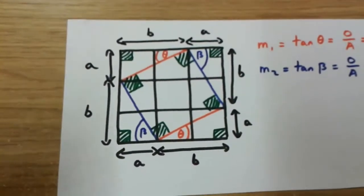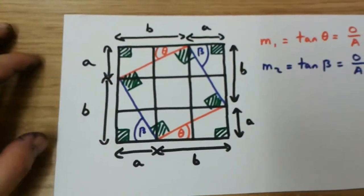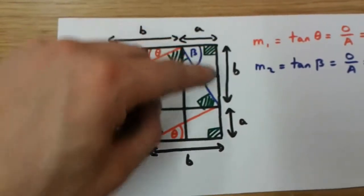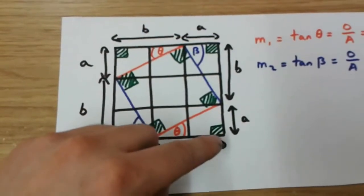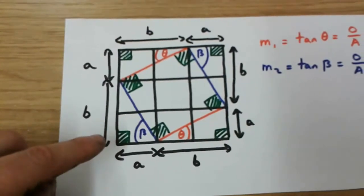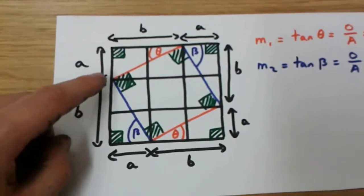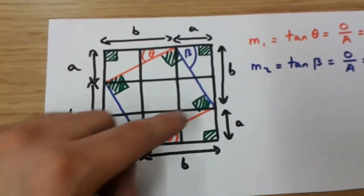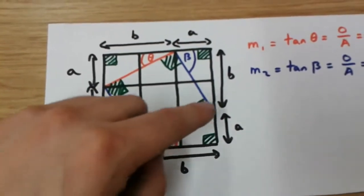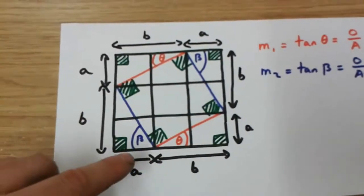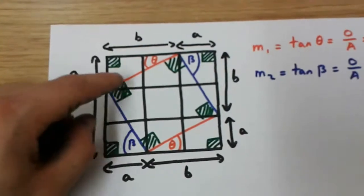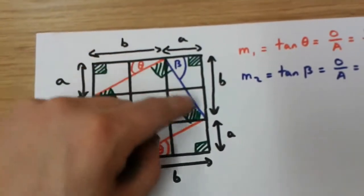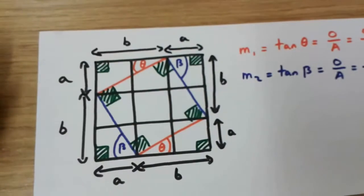So let's take a look at this diagram over here. What you should know is that this is a right angle, this is a right angle, this is a right angle, and this is a right angle. The blue line over here and the red line over here are perpendicular, and likewise, the red line over here and the blue line over here are perpendicular.